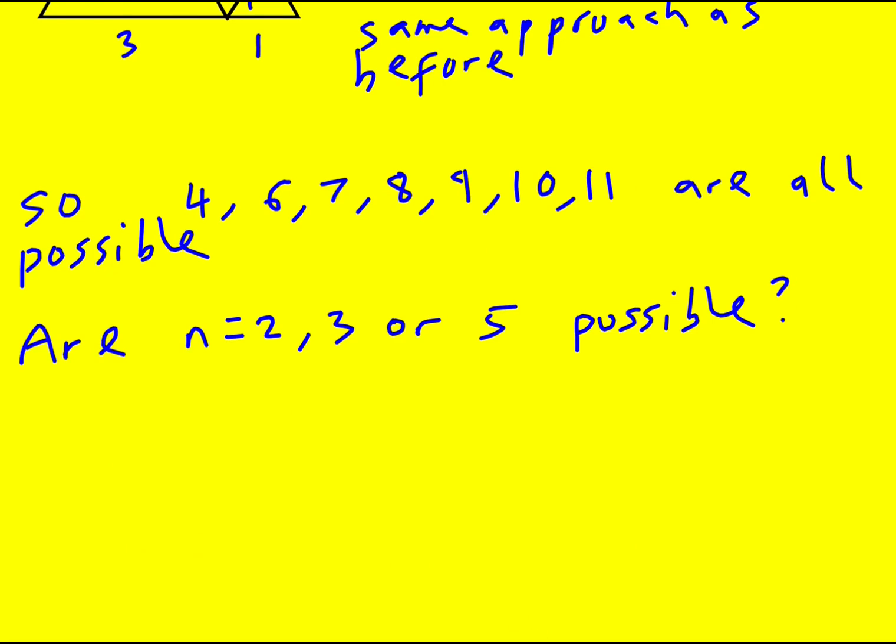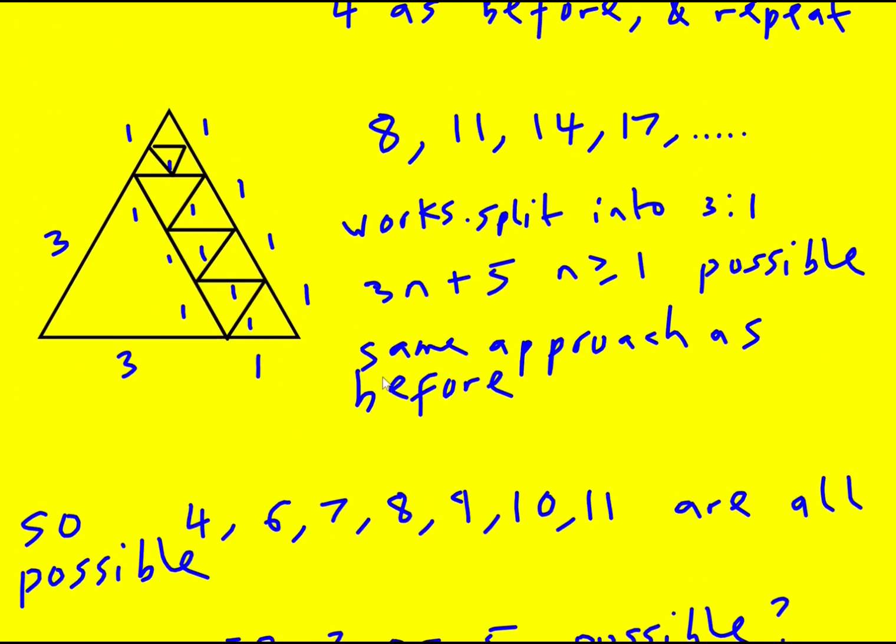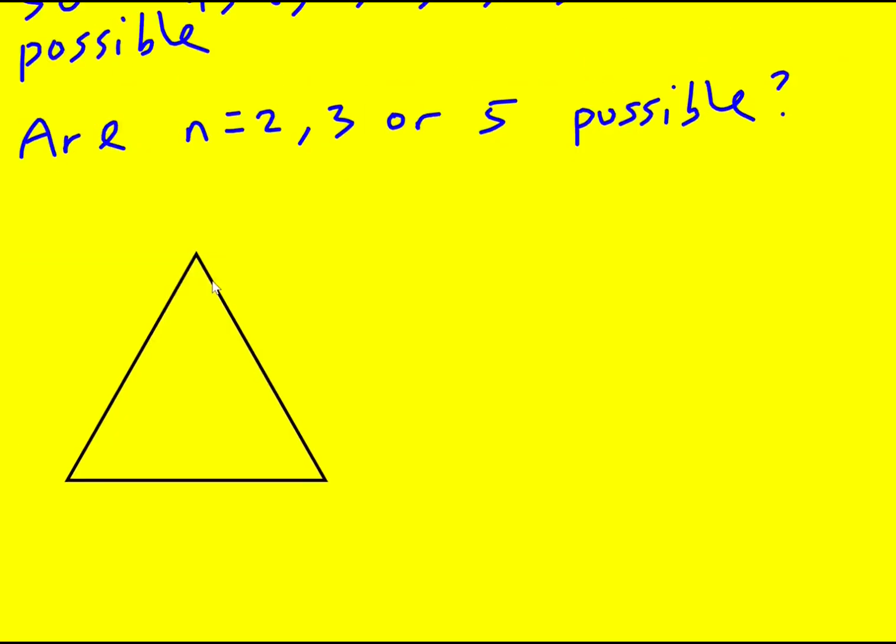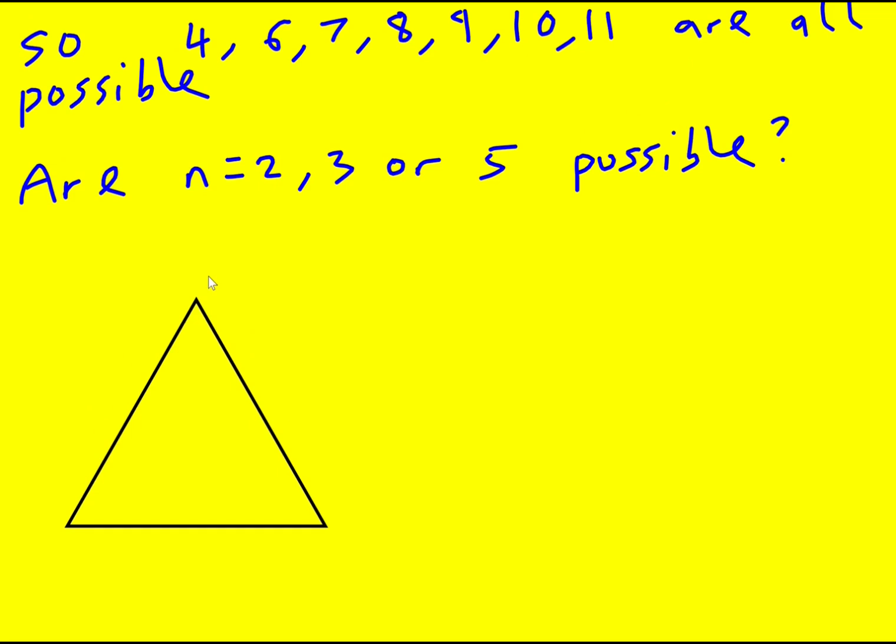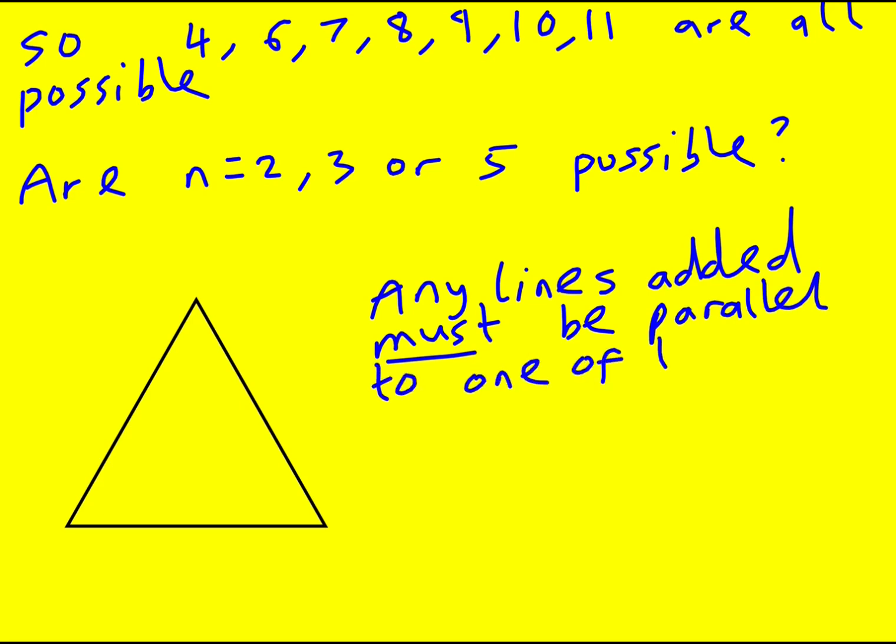So let's take a look at this. One thing to note it's actually quite subtle and we've not spoken about it before but all the extra lines drawn in from the original triangle have always been parallel to one of the three lines. We have to maintain the 60 degrees and so that has to be the case. It was the case here as well. So any lines added must be parallel to one of the three sides.